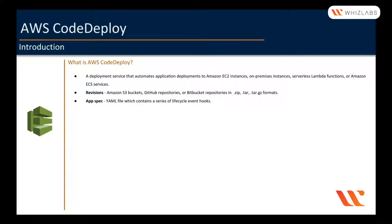CodeDeploy comes with certain default deployment configurations. They are basically a set of rules and success and failure conditions used by CodeDeploy during a deployment. They define how the deployment is performed. For example, you can deploy the code to all instances in a fleet at once, or you can choose to deploy one at a time.